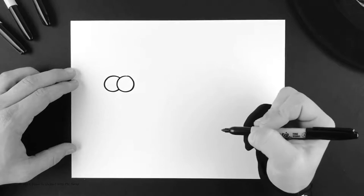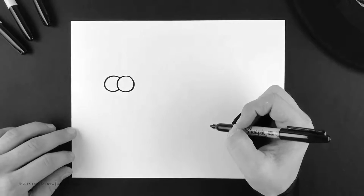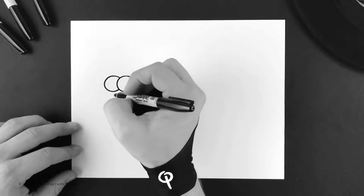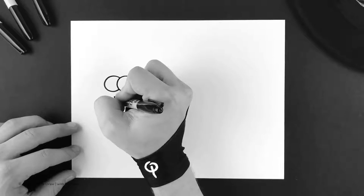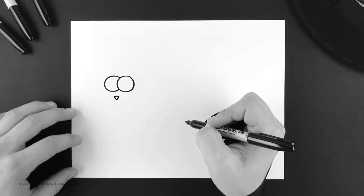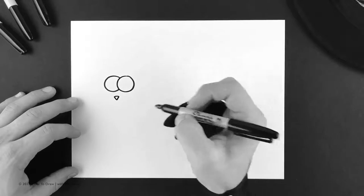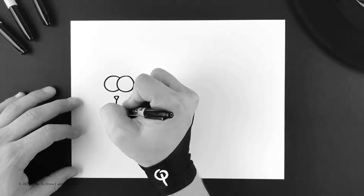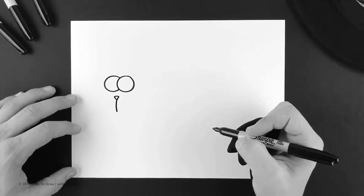And then in the center where his eyes are, let's go ahead and put an upside down triangle for his nose. Then you can do one curved line coming down like that,